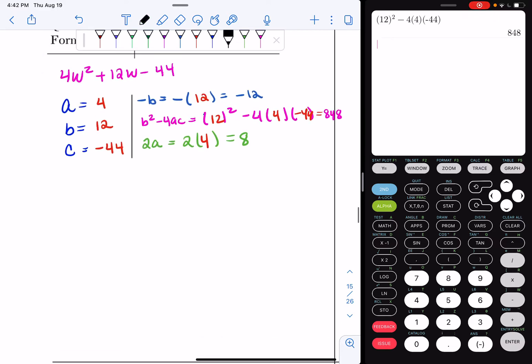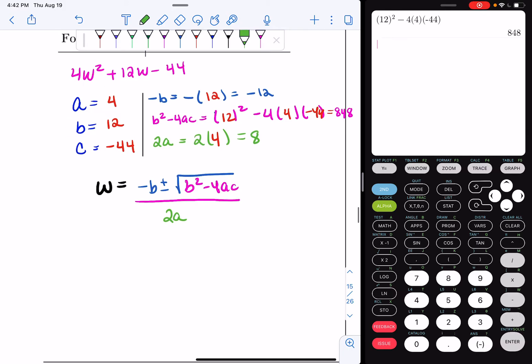So I'm going to just rewrite your quadratic formula. In this case, we have a variable of w, not x. So I'm going to say w is equal to negative b plus or minus the square root of b squared minus 4ac all over 2a. So in this case, we can say w is equal to, we know negative b is negative 12, plus or minus the square root of b squared minus 4ac, which we found out was 848, all over 2a, which we said was 8.